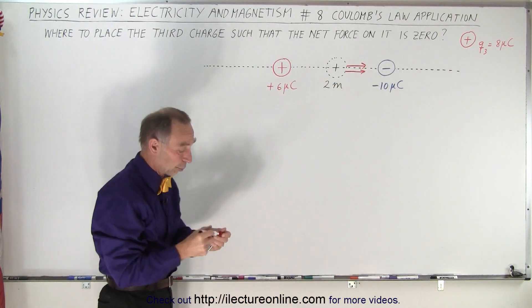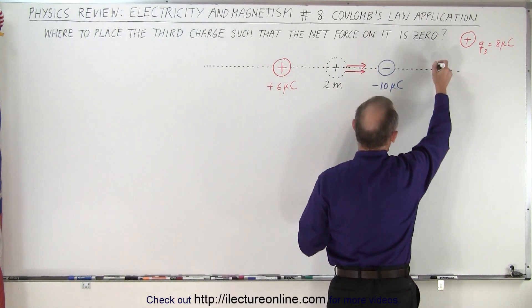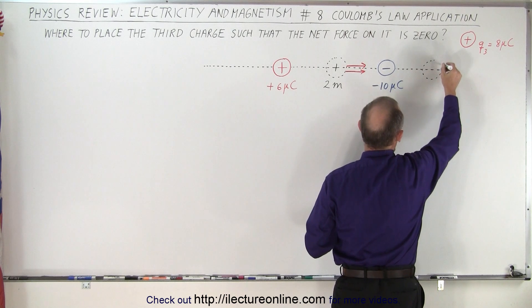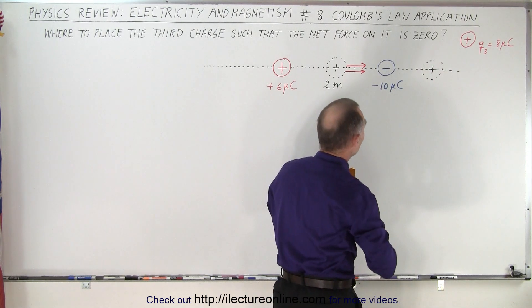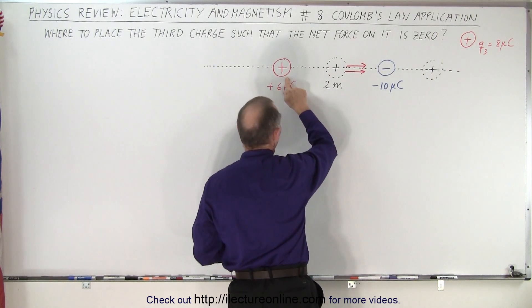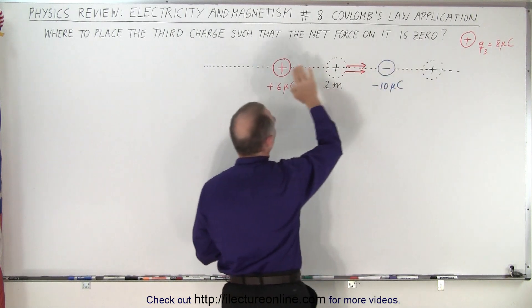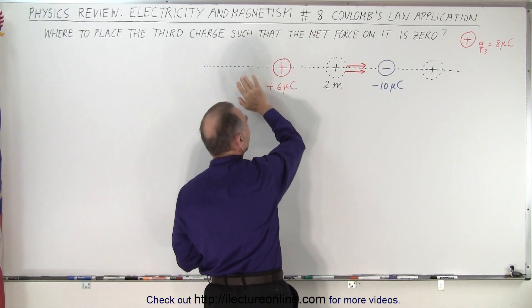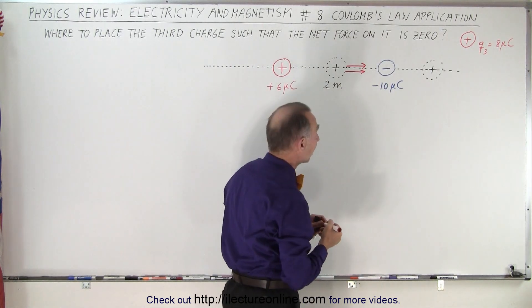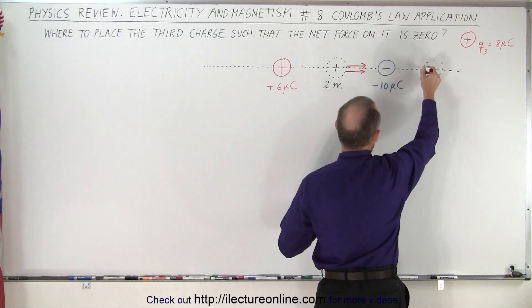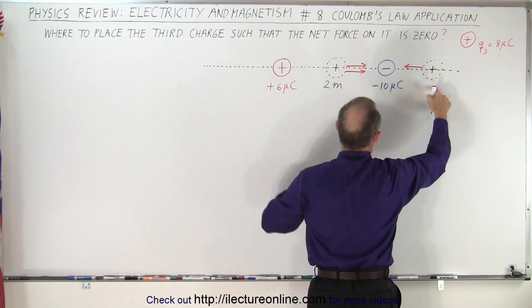That's not the place where you want the third charge. So let's put it over here. And again, it's a positive 8 microcoulombs. Based upon this positive charge being here, this charge is going to feel a force of attraction. But since that charge is far away, and it's relatively smaller than this charge, that would seem that the force towards the left would be rather small between those two charges.